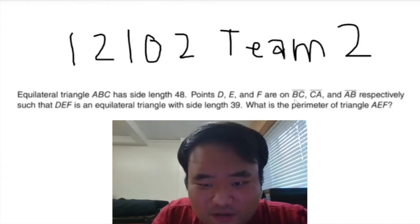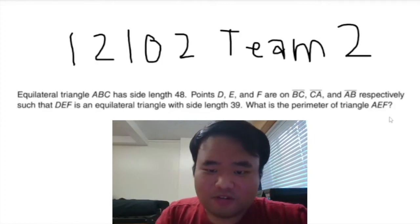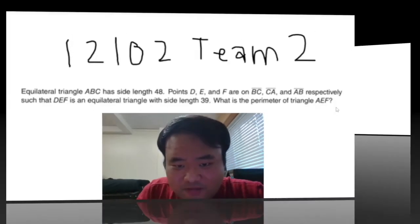Points D, E, and F are on BC, CA, and AB respectively, such that DEF is an equilateral triangle with side length 39. What is the perimeter of triangle AEF?